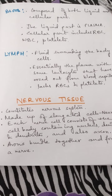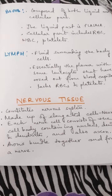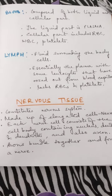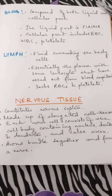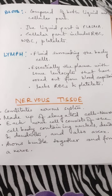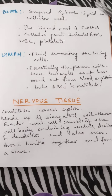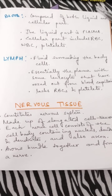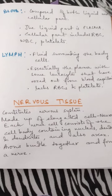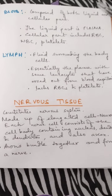Lymph is the fluid surrounding the body cells, but it is different from blood. It is essentially plasma with some leukocytes — that means WBC — that have oozed out from blood capillaries. It lacks RBCs and platelets, meaning RBCs and platelets are absent in lymph; only WBC is present. That is why lymph is yellowish white in color, whereas blood is red in color because of RBCs.